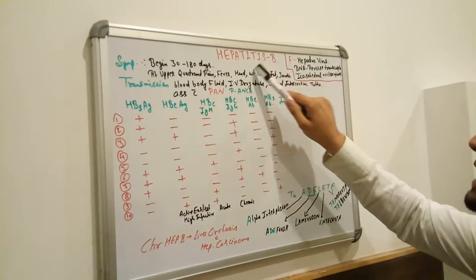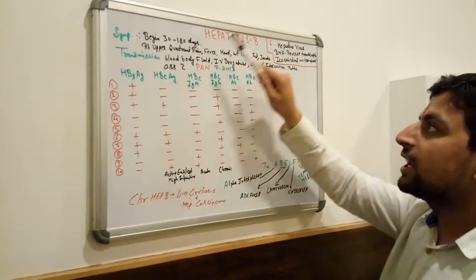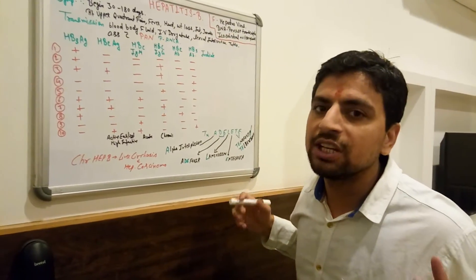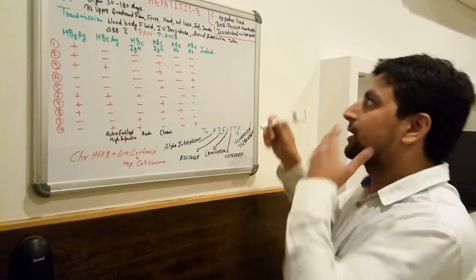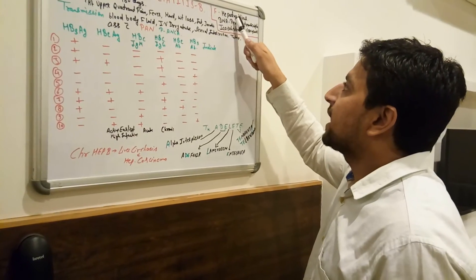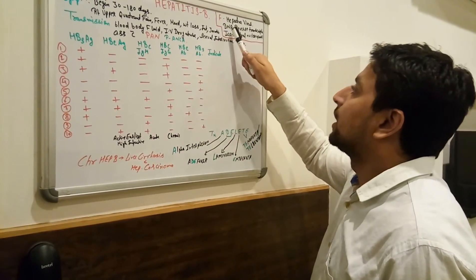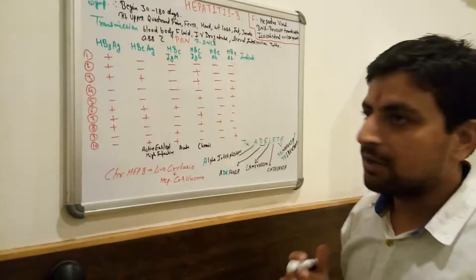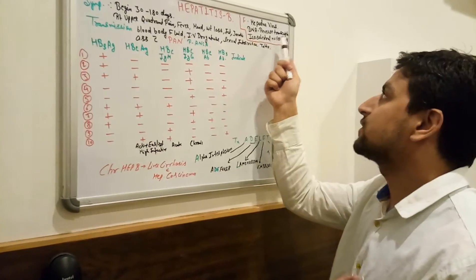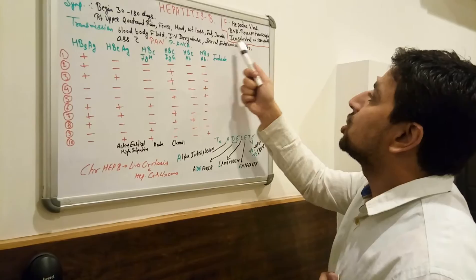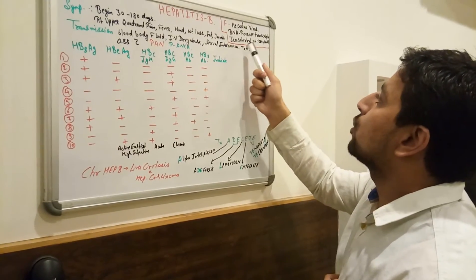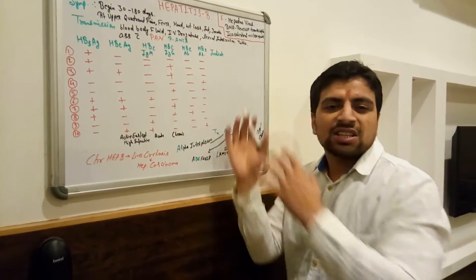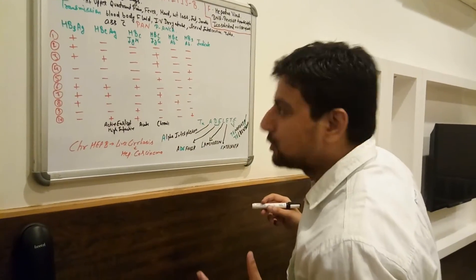Hepatitis B: 'hepato' means liver, and 'itis' means infection and inflammation of the liver. Its family is Hepadnaviridae. The Hepatitis B virus is a DNA virus that uses reverse transcriptase. Its shape is an icosahedral nucleocapsid — they ask such questions in microbiology.